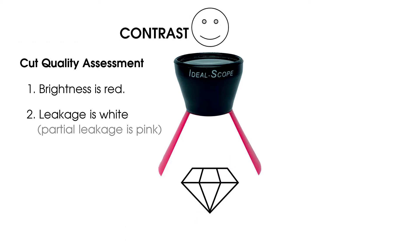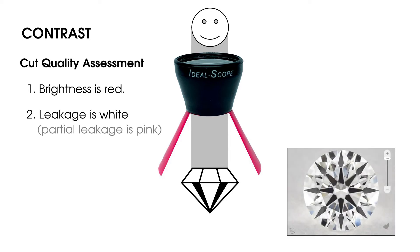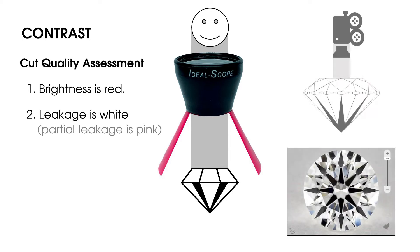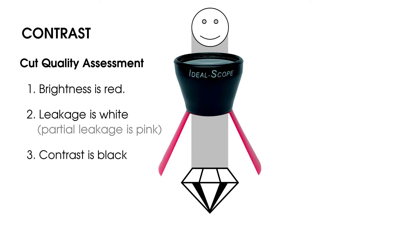That brings us to contrast. Some light from above will always be blocked by the viewer, creating a dark pattern. You can see the contrast effect in diamond photos because the camera blocks light the same way a viewer does. The on-and-off contrast effect when diamonds move is a dramatic component of scintillation. In IdealScope cut quality assessment, the contrast pattern is black.